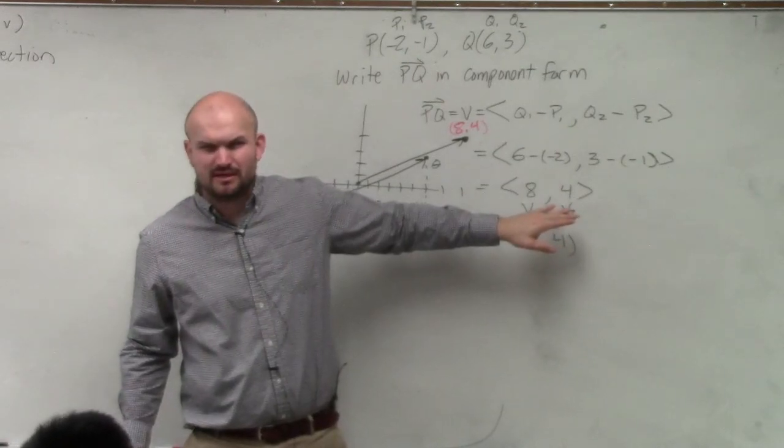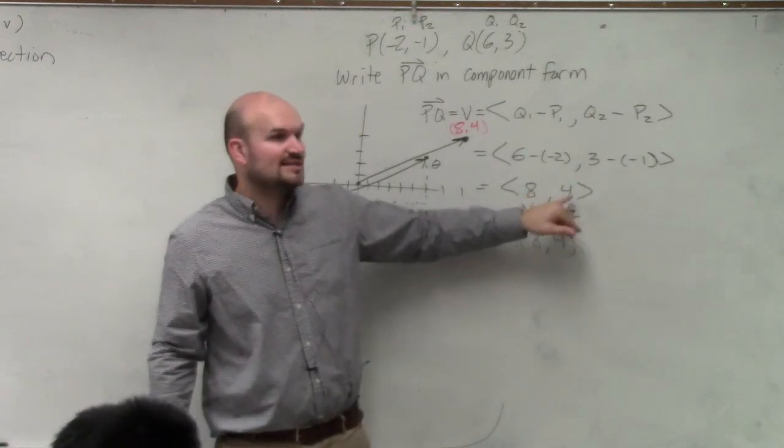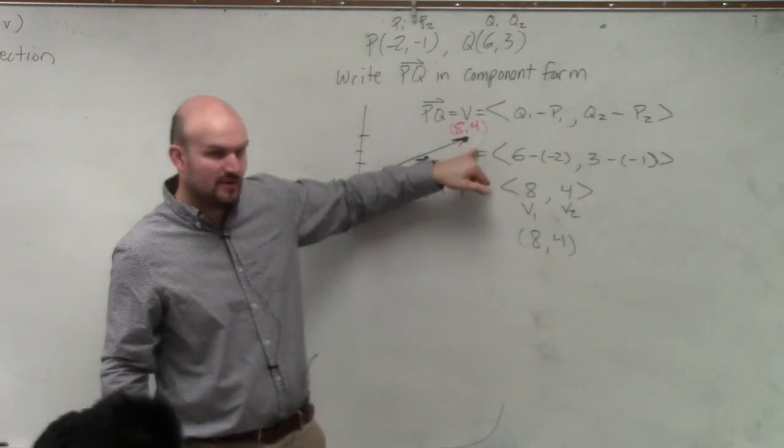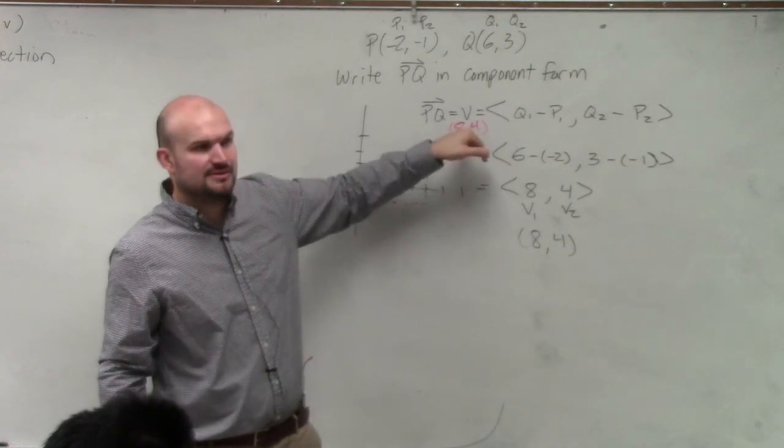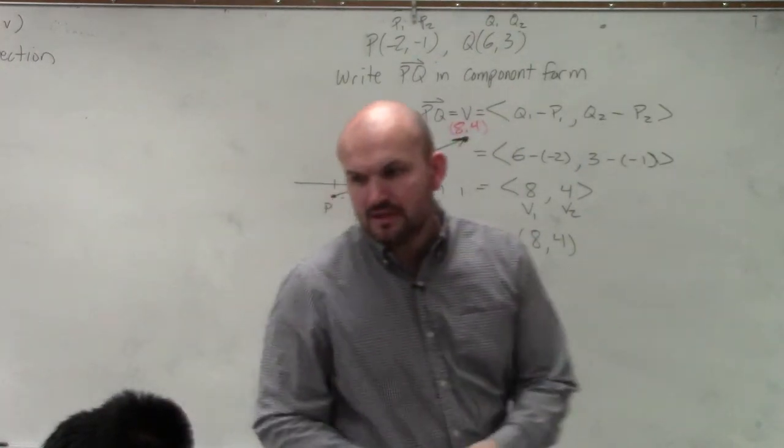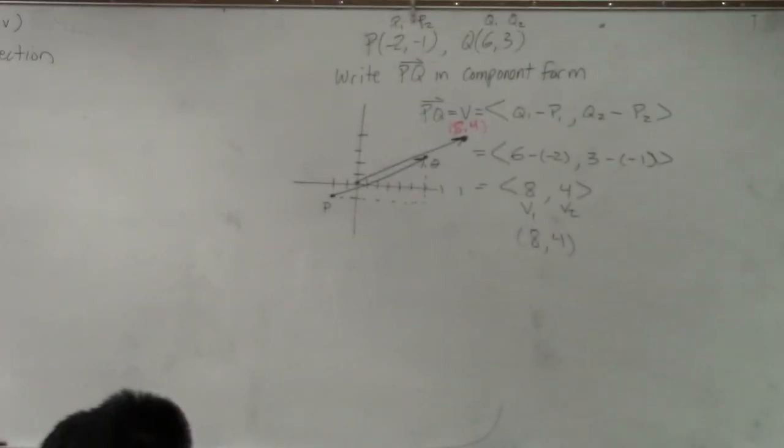Does that make sense? A little bit? Okay. So just remember, this is saying that's a directed line segment from 0 to the point 8, 4. Directed line segment. That is just a point. Okay, so now we've found component form. So here we go.